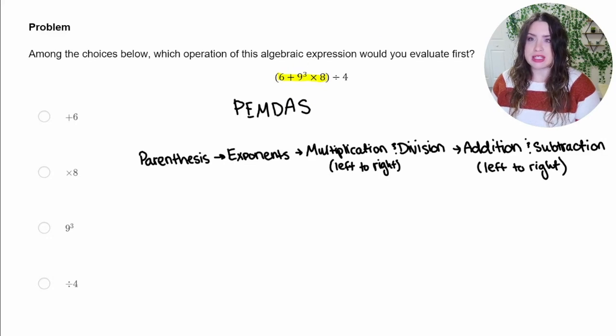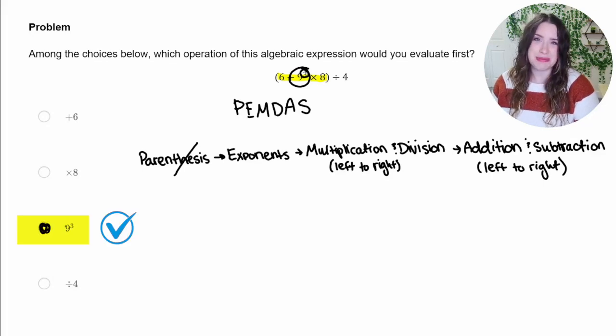But within that parentheses, there's a lot going on. So we're going to start the order back over. So parentheses, there's no more like parentheses inside of parentheses. So the next thing that we would target are the exponents, which we do have an exponent right here. So we would evaluate that 9 cubed first before we do anything else. So the correct answer would be 9 cubed.